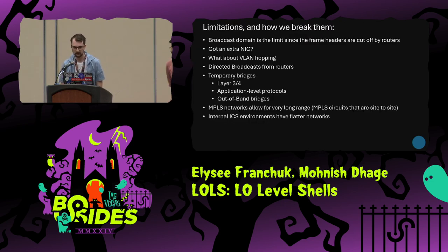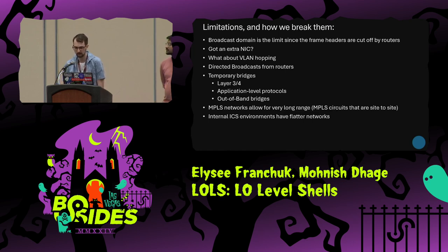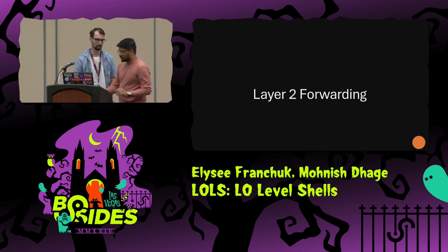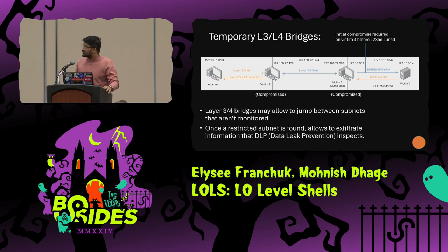So what are the limitations of this? Obviously the broadcast domain and the frame headers — they're cut off by the routers once they traverse to different networks. But we can bypass this with a NIC. We can do VLAN hopping, directed broadcast from routers, Layer 3/4 application layer protocols, out-of-band bridges. These are all ways we can extend from one LAN to another. And MPLS networks — this works on MPLS the same way that it works on any other Ether type. MPLS circuits can enable that communication. Internal ICS networks are very flat, which would make them a prime target for this. We could also do Layer 2 forwarding — if there is a victim machine that is compromised, we could jump from one NIC to the other, basically hopping the subnet. We could also create temporary Layer 3/4 bridges, basically accessing restricted subnets that could have DLP preventions on them.